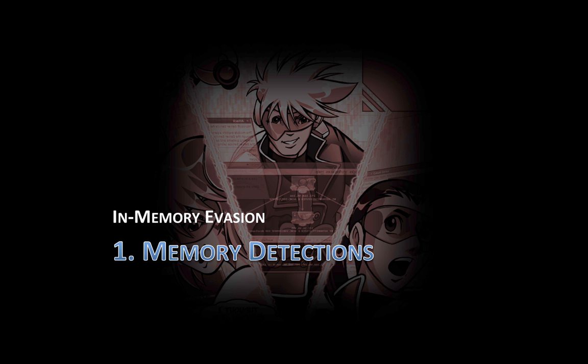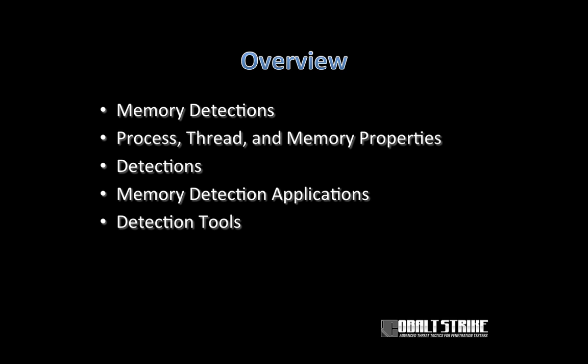Alright, let's jump into part one: memory detections. In this lecture, we'll start out with a definition of memory detections. We'll then walk through the properties of processes, threads, and memory, and the anomalies of those properties that are used to detect memory-injected DLLs. We'll cover where these types of heuristics are used, and wrap up with a discussion of various detection tools.